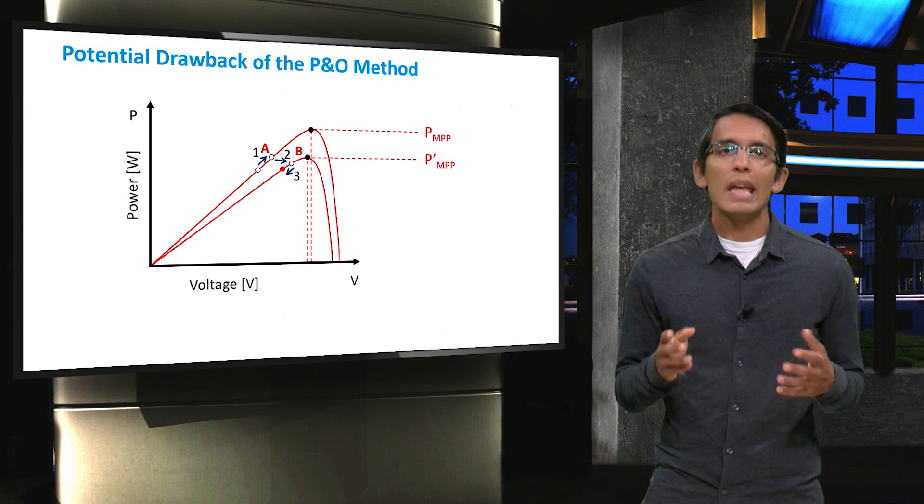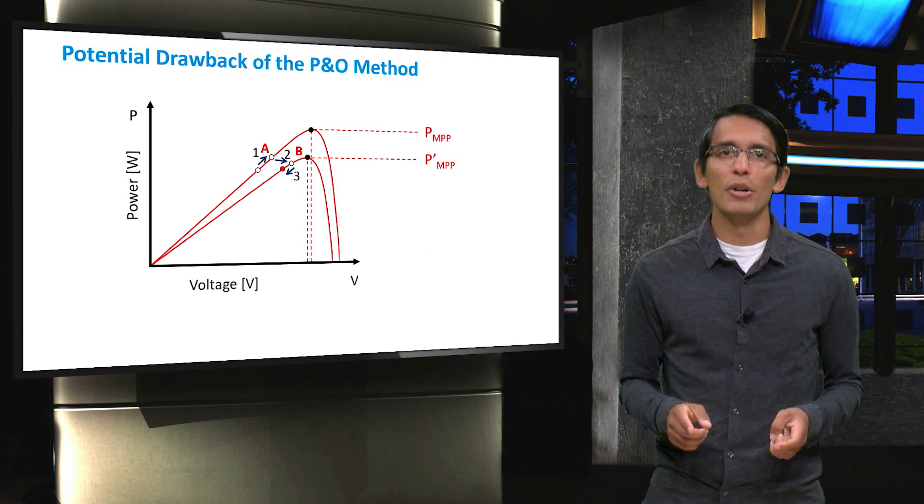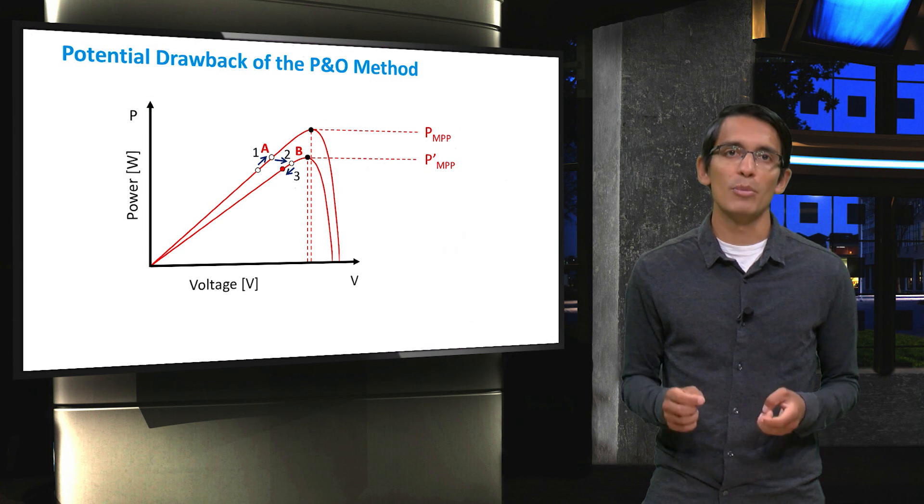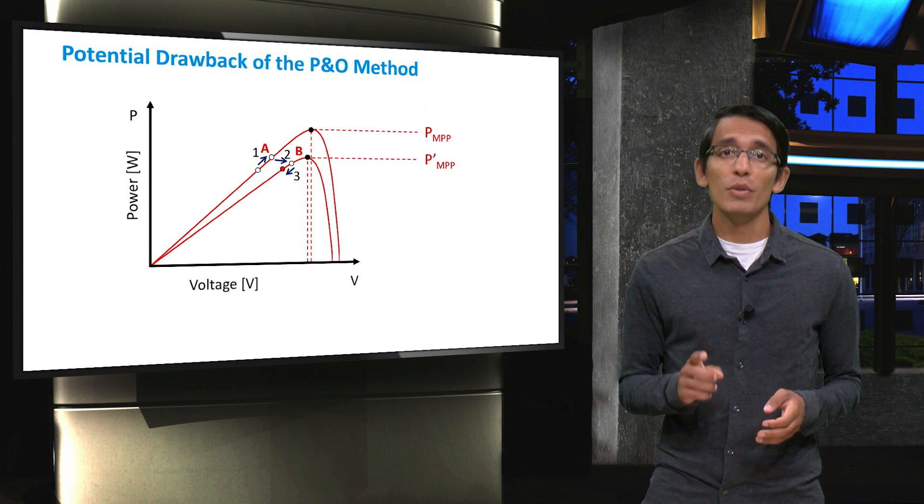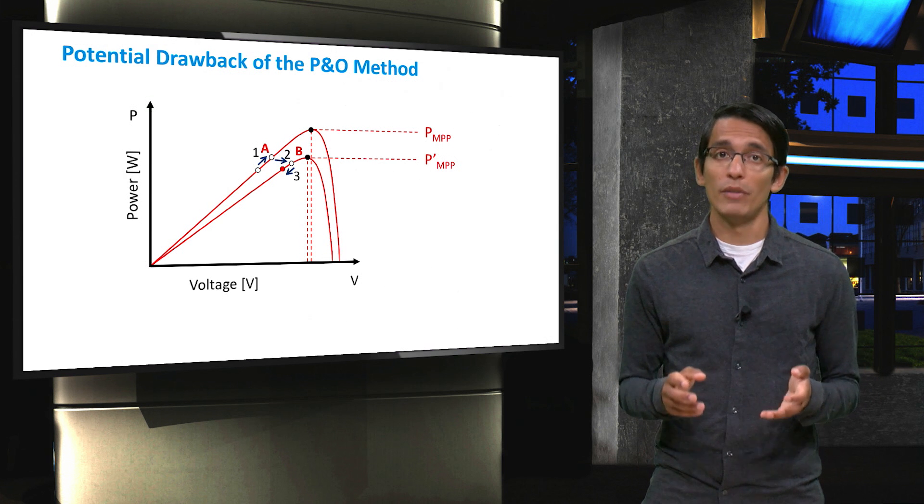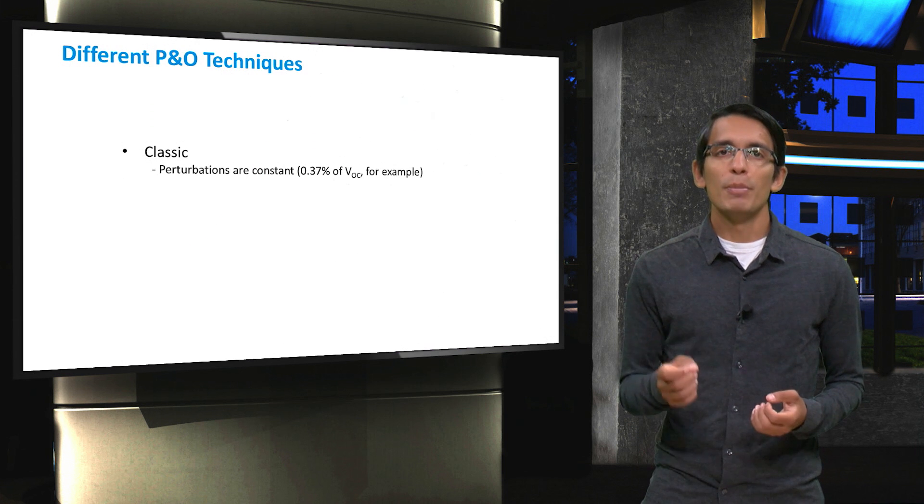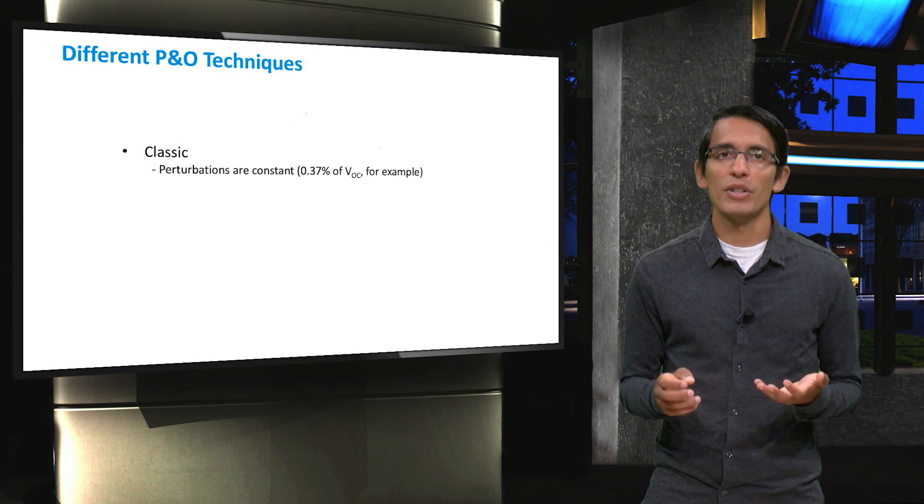However, even with this drawback, the perturb and observe technique usually results in better output than using indirect methods discussed in the previous video. As a final note, before I conclude this video, it's good to know that there are multiple ways to use the perturb and observe technique. In the classic approach, perturbations are generally constant, a value like 0.37% of the VOC of a panel could be used.